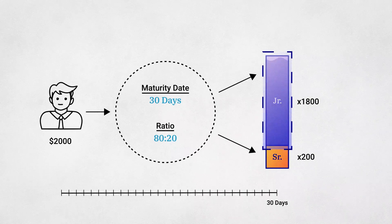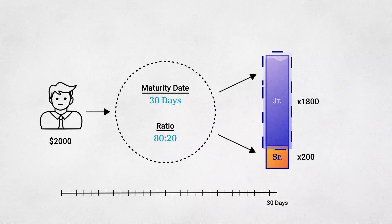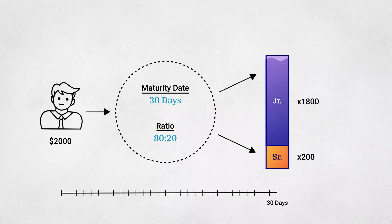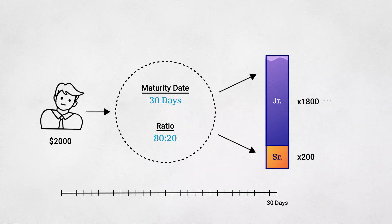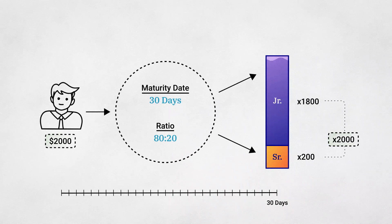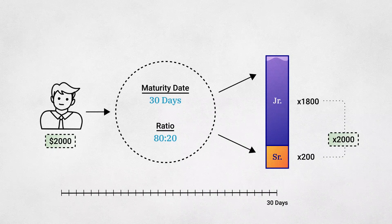In this case, the junior tranche tokens realize all of the growth, while the senior tranche tokens remain stable. At the end of the maturity period, the total value of Ample between senior and junior tranche tokens is equivalent to what Bob would have owned if he simply held Ample over the 30-day period.